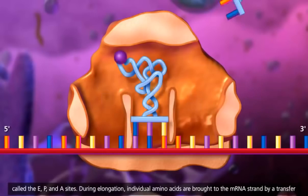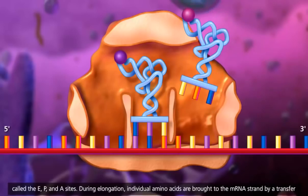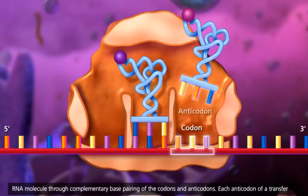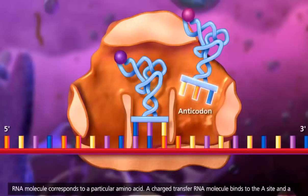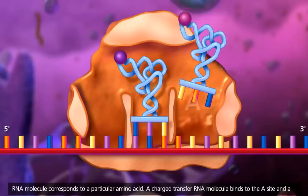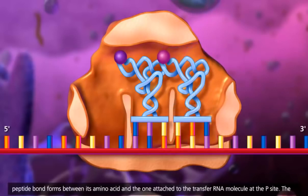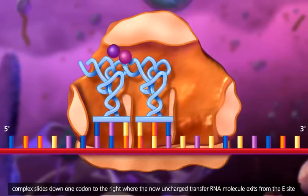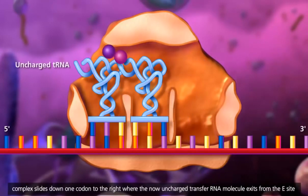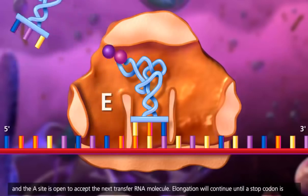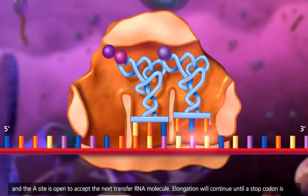During elongation, individual amino acids are brought to the messenger RNA strand by a transfer RNA molecule through complementary base pairing of the codons and anticodons. Each anticodon of a transfer RNA molecule corresponds to a particular amino acid. A charged transfer RNA molecule binds to the A site and a peptide bond forms between its amino acid and the one attached to the transfer RNA molecule at the P site. The complex slides down one codon to the right where the now uncharged transfer RNA molecule exits from the E site and the A site is open to accept the next transfer RNA molecule.